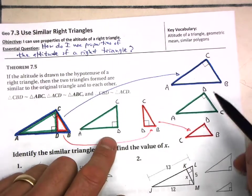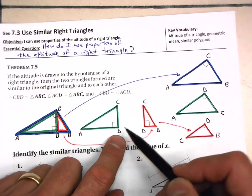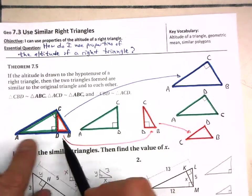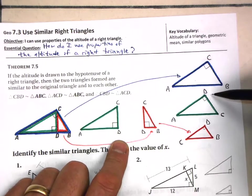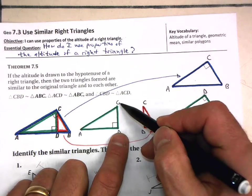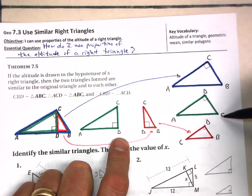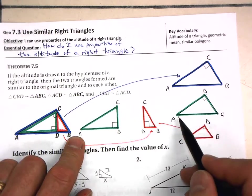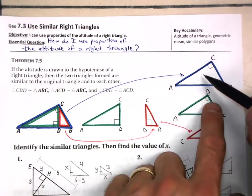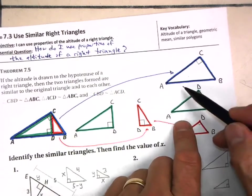Now I need to figure out where my letters go. The easiest way to do that is to look at the right angle, so that's going to be D in this particular case. And then look at the smaller side. Here, the smaller side goes out to point C, so therefore the smaller side goes out to point C, and the remaining vertex is A.